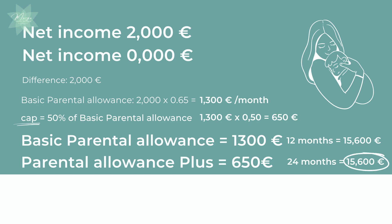So you receive the same amount — it's just spread over a longer period of time. It is particularly worth claiming Parental Allowance Plus if you have an income after your child was born, for example from working part-time. In some cases you might receive the same amount of Elterngeld as with basic parental allowance, but for Elterngeld Plus you can still receive it for double the amount of time. I will give you two examples to explain this a little bit better.